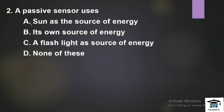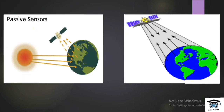Next question: A passive sensor uses — Option A: Sun as the source of energy; Option B: its own energy source; Option C: a flashlight as energy source; Option D: none of these. What is the passive sensor? There are two types of remote sensing: passive sensing and active sensing.